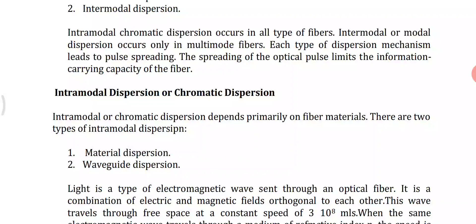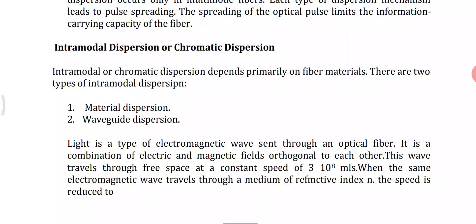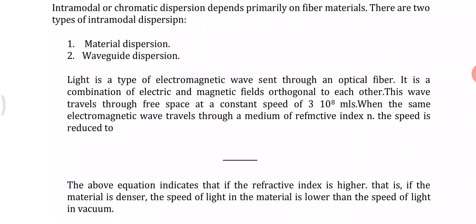Intramodal or chromatic dispersion depends mainly on the fiber material. There are two types of intramodal dispersion: material dispersion and waveguide dispersion. In material dispersion, the dispersion arises due to the variation of the refractive index of the core material as a function of wavelength or frequency of light. Light is a type of electromagnetic wave consisting of electric and magnetic fields orthogonal to each other.